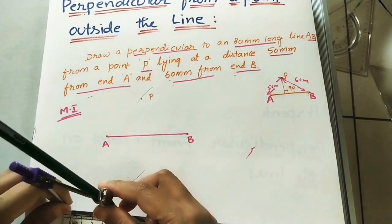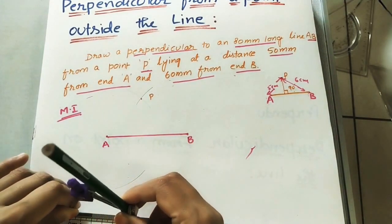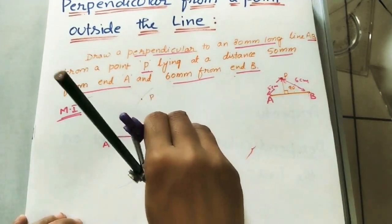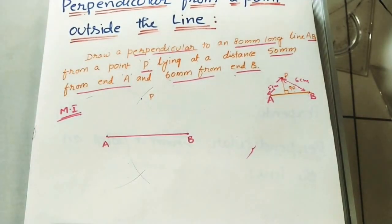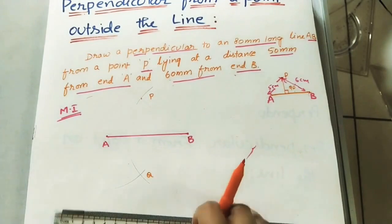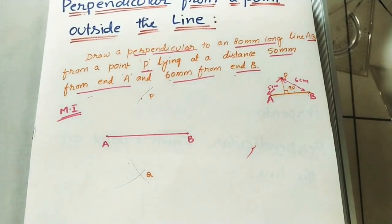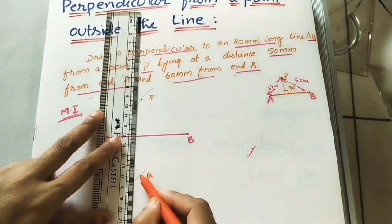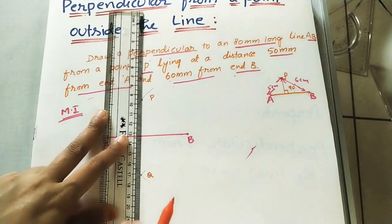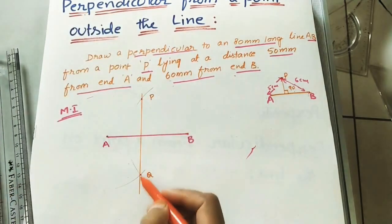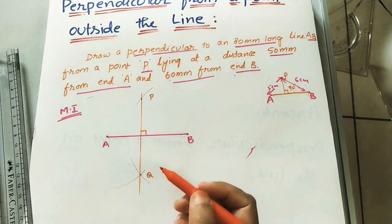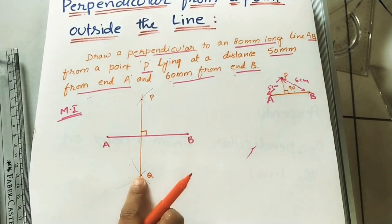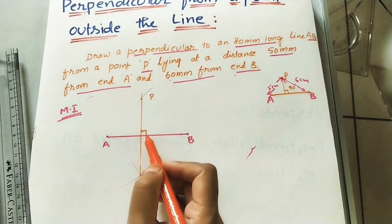And from B it is 6 cm. So from B cut this arc. You will get one intersection point. It is some Q point. Do the line which is joining P and Q. This intersection point is Q. Join P and Q. So this line is the perpendicular line to the AB.